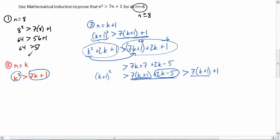And the answer is that 2k minus 5 is bigger. Because, remember, k is n, and n has to be bigger than 8. And for any k bigger than 8, the 2k minus 5 will always be bigger than the 1. And so, therefore, since this is bigger than this, and the middle part is bigger than the end part, that means that k plus 1 squared is bigger than 7 times k plus 1 plus 1.